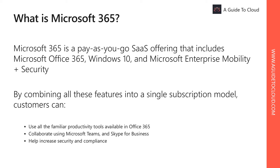Office 365 includes the latest Office apps for your PC and Mac — Word, Excel, PowerPoint, and Outlook — plus a full suite of online services for email, file storage and collaboration, meetings, and more. Windows 10 is the most productive and secure version of Windows, with comprehensive deployment and device and app management capabilities. Enterprise Mobility plus Security, or EMS, is designed to help manage and protect users, devices, apps, and data in a mobile-first, cloud-first world — including Microsoft Intune, Azure AD Premium, and Azure Rights Management Services.